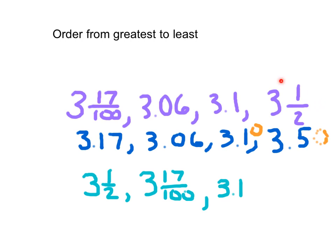Finally we're left with 3 and 6 hundredths. I think I would have caught my error when I looked over my list at the end if I had accidentally written down that same number again. So looking at that again: 3 and 1 half, 3 and 17 hundredths, 3 and 1 tenth, 3 and 6 hundredths.